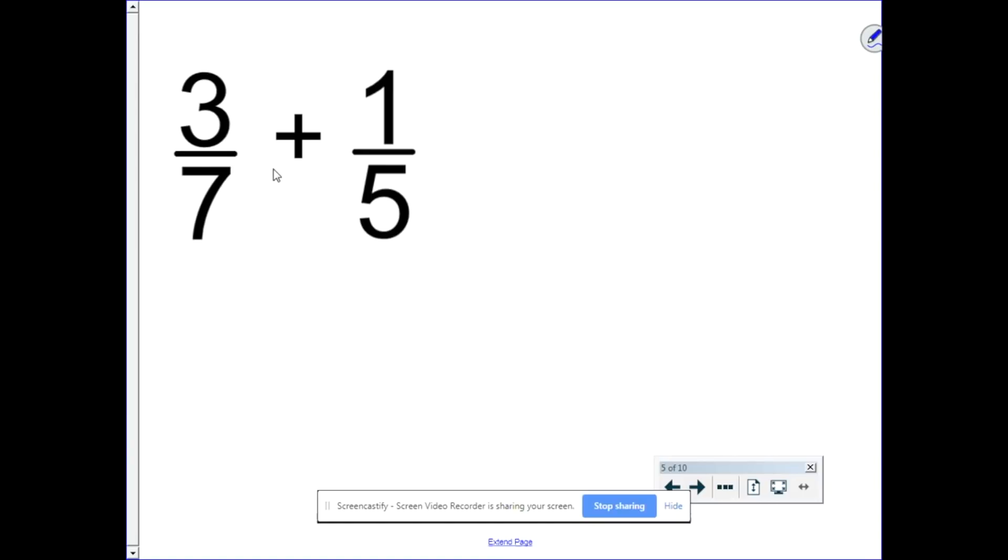Let's take a look at three-sevenths. Double three, we get six. Well, that fits in seven. So we know that three-sevenths is less than half. One-fifth. Double one, we get two. Two fits into five. So we know that one-fifth is less than half.